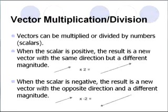Vectors can be multiplied or divided. When multiplying a vector by a positive number, such as 2, the result will be that the vector will be multiplied by 2 in length, but the direction will stay the same.